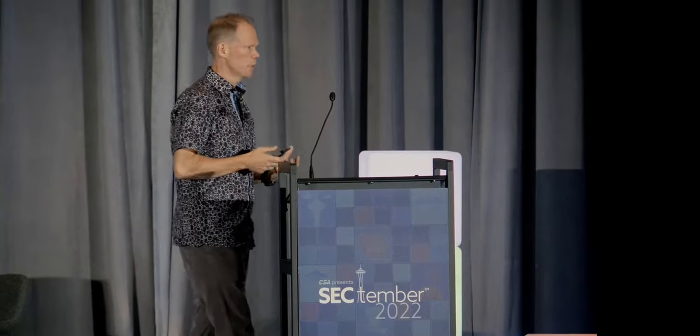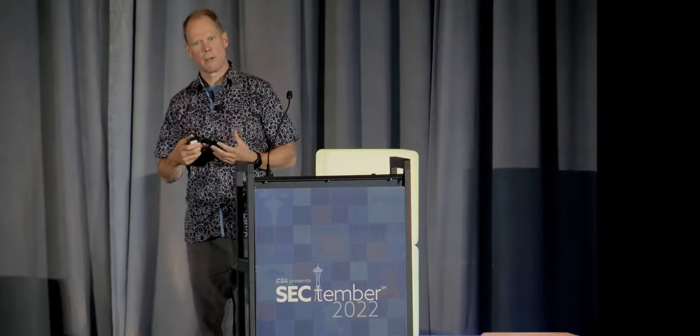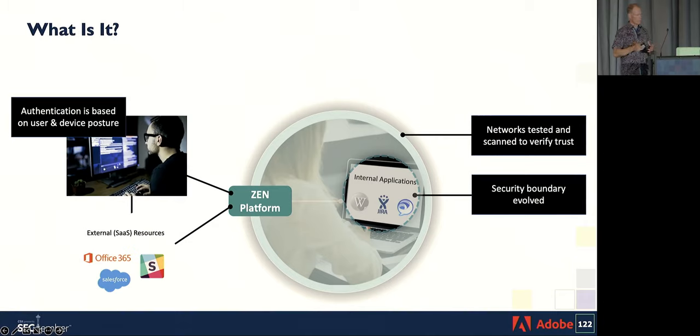Our zero-trust journey was really about identifying those gaps and delivering something that both empowers the user and improves the user experience while meeting our security guidelines. We decided on a model that included authentication for both the device and the user, and using that telemetry to make access decisions. We also needed to reflect that much of our data is now in SaaS applications or in the cloud, so we needed to move security controls out to the endpoint rather than depending on the corporate network.